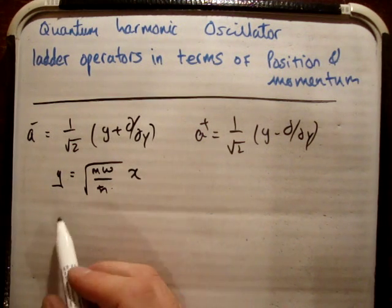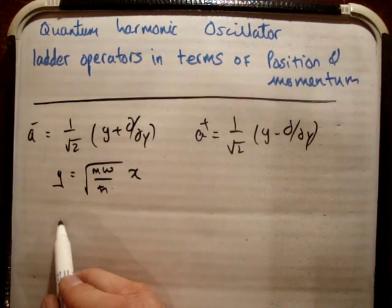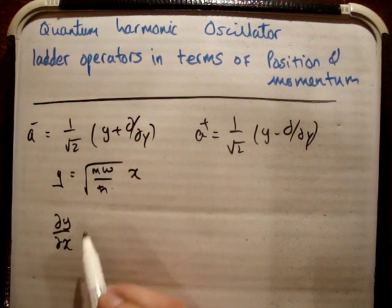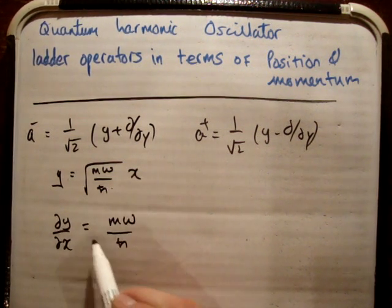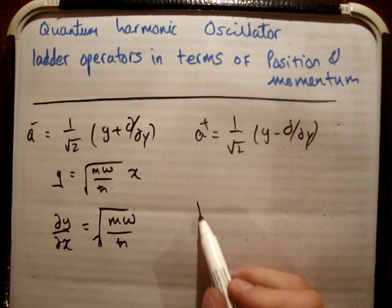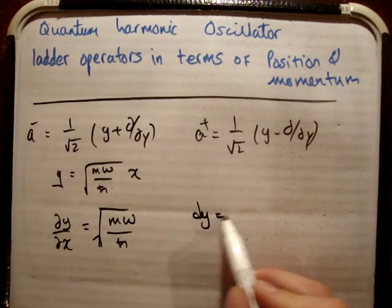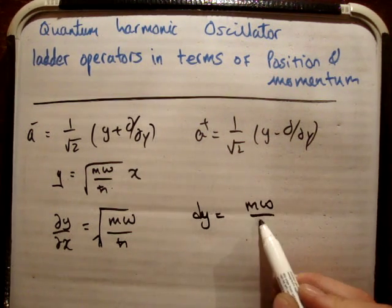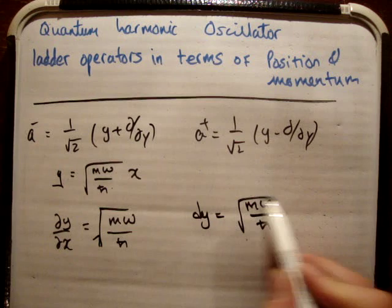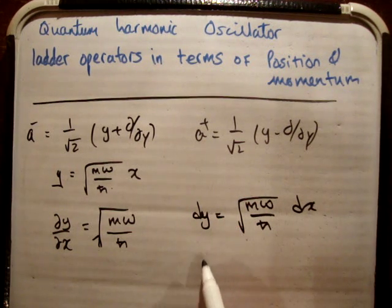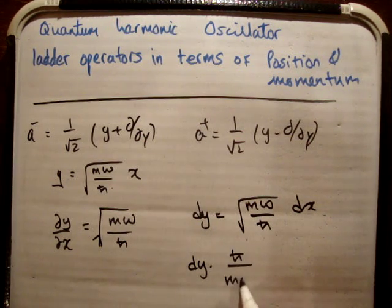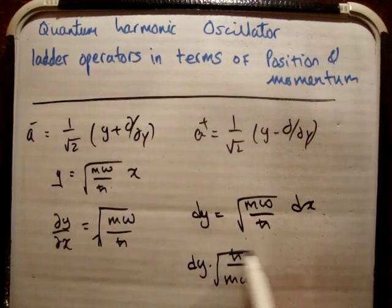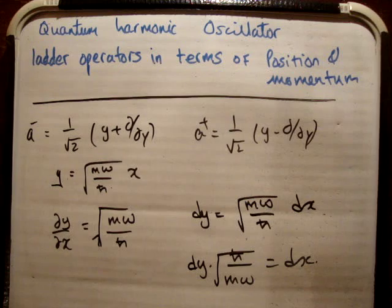So how do we get d/dx or d/dy? Well, dy/dx is clearly going to be equal to √(mω/ℏ). That means dy = √(mω/ℏ) dx, or equivalently dx = √(ℏ/mω) dy.